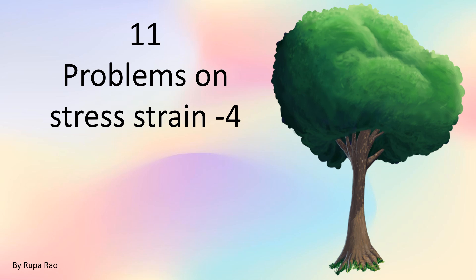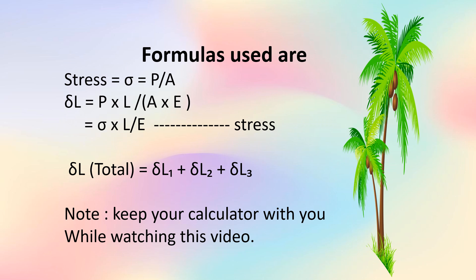This is the 11th video and the 4th video on problems on stress strain. The formulas used are: stress is equal to P upon A, delta L is equal to PL upon AE or sigma into L divided by E, and the total elongation of the bar is equal to delta L1 plus delta L2 plus delta L3.